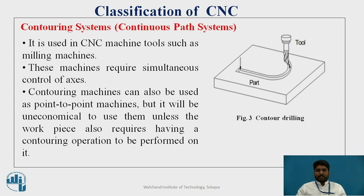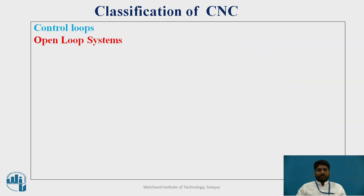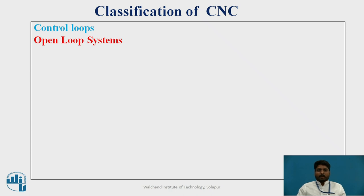As shown in figure 3, in contour machining the part is loaded on the CNC machine and the tool is used for milling, where the surface is removed completely — not just drilling or boring as seen in the previous example. Next, in the classification we will look at control loops, specifically the open loop system.